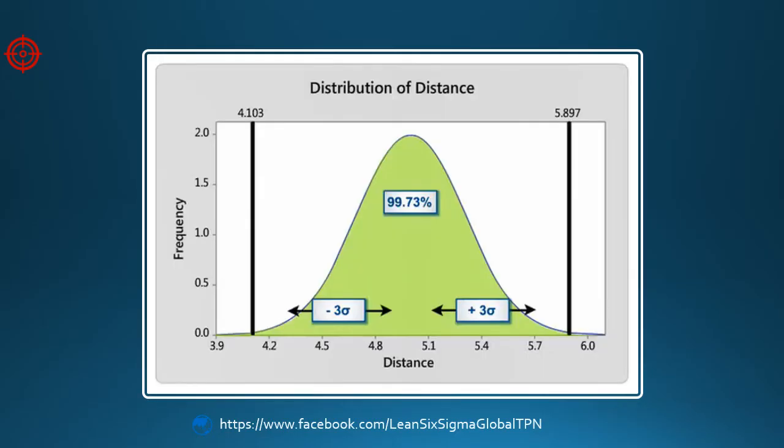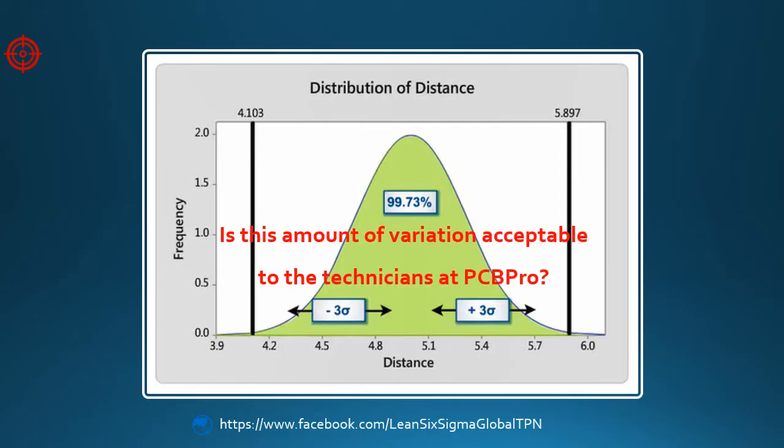We can model the data with the normal distribution. The estimated length between components on the circuit board falls within plus and minus 3 standard deviations of the mean 99.73% of the time. So, is this amount of variation acceptable to the technicians at PCB Pro?